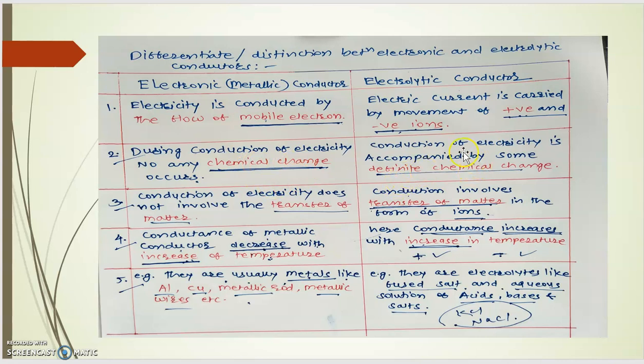But at the same time, if you see the electrolysis of NaCl, at that time, conduction of electricity is accompanied by some definite chemical change. Means some type of chemical reaction is happening in case of electrolytic conductors. That means it may be oxidation, it may be reduction, or any other. So there is occurrence of chemical change.